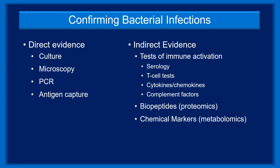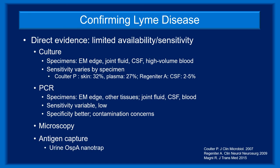Proteomics and metabolomics may identify specific substances, such as biopeptides, that are byproducts of an infection. Lyme disease is a bacterial infection, so you might expect diagnostic testing to provide direct evidence of Borrelia burgdorferi. Unfortunately, direct evidence is very difficult for clinicians to obtain. While culture is the gold standard, the bacterium is notoriously hard to cultivate, which is why local and reference labs don't offer it.